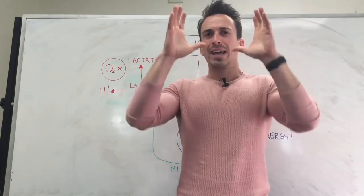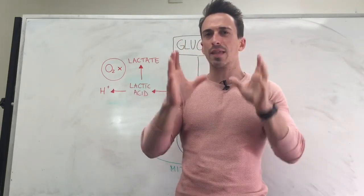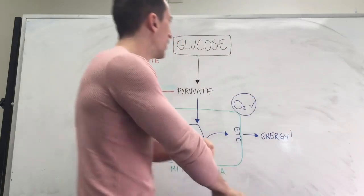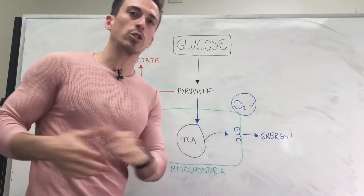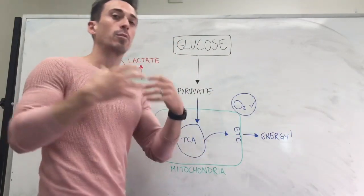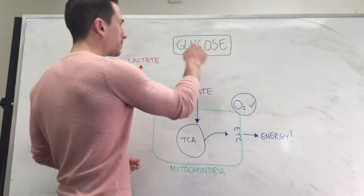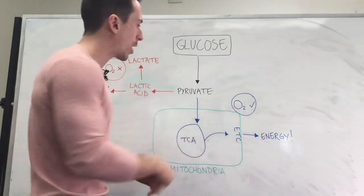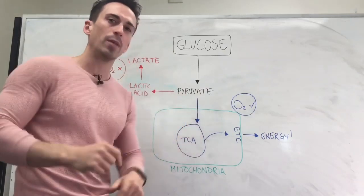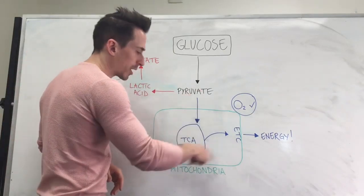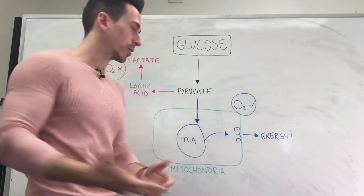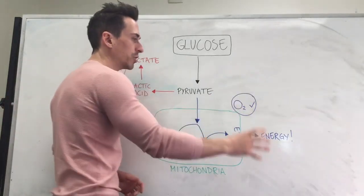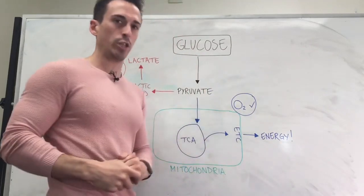I want to think about exactly the metabolic processes that occur that are associated with lactic acid. We know that when we have sugar, or basic sugar — glucose — that under the process of glycolysis, glucose turns into something called pyruvate. Now the textbooks will say that pyruvate will jump into the mitochondria and through something called the tricarboxylic acid cycle, also known as the Krebs cycle, and the electron transport chain, it uses oxygen to create a whole bunch of energy.